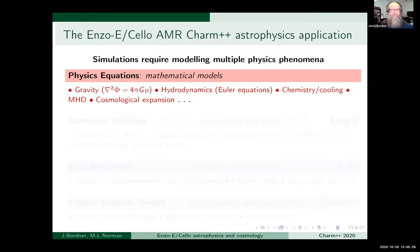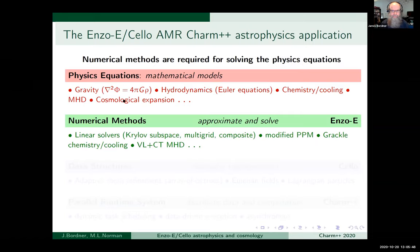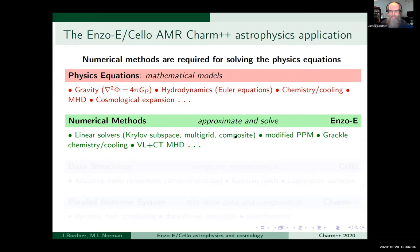We begin with the physics equations. Gravity is dominant, usually. We also have hydrodynamics for modeling the gas, chemistry and associated cooling, magnetohydrodynamics, and cosmological expansion. These are solved by multiple numerical methods, forming the Enzo-E layer. We have linear solvers for the gravity Poisson equation, modified piecewise parabolic method for hydrodynamics, our Grackle library written by Britton Smith for chemistry and cooling, and recently the LCT MHD method implemented by Matthew Abruzzo.